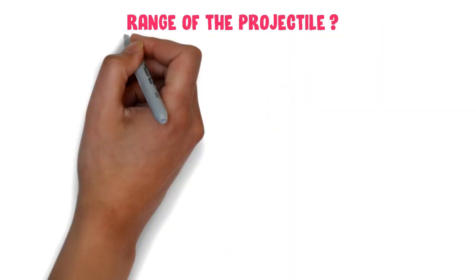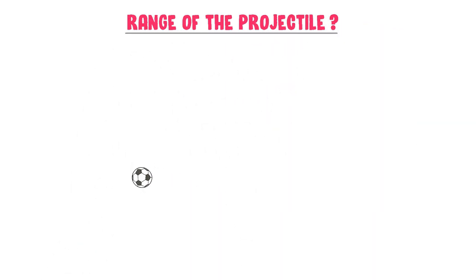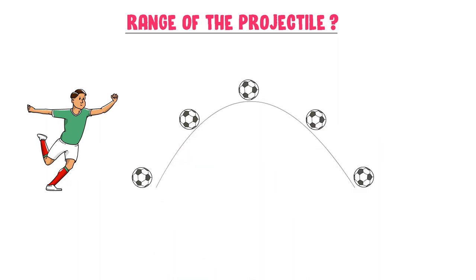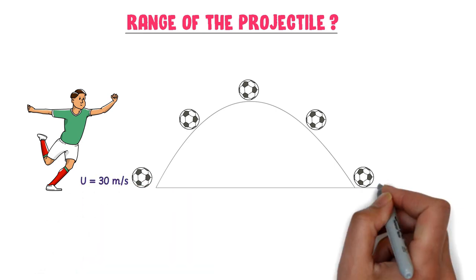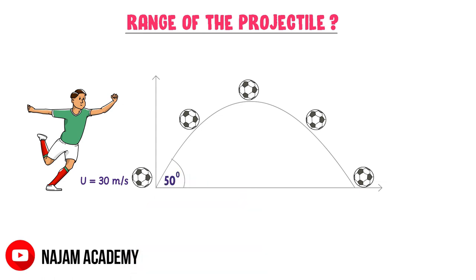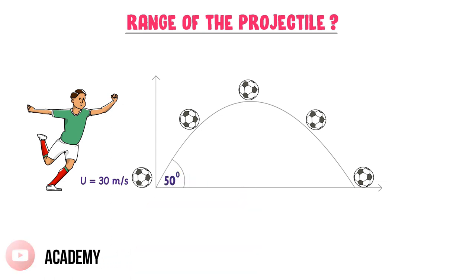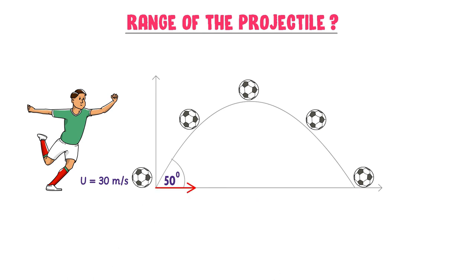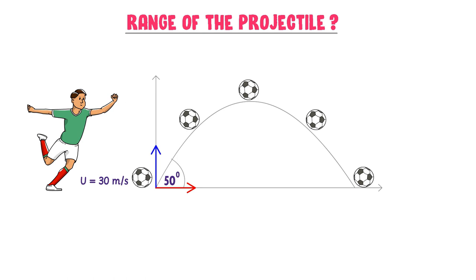Now what is the range of the projectile? Consider a ball. Let you kick this ball and it starts moving along a curved path. Let the initial velocity of the projectile be u equal to 30 meter per second and the angle of projection is 50 degrees. We have learned in the first lecture of projectile motion that this ball moves in the horizontal direction as well as in the vertical direction. The horizontal component of the velocity is ux equal to u cos theta and the vertical component of the velocity is uy equal to u sin theta.